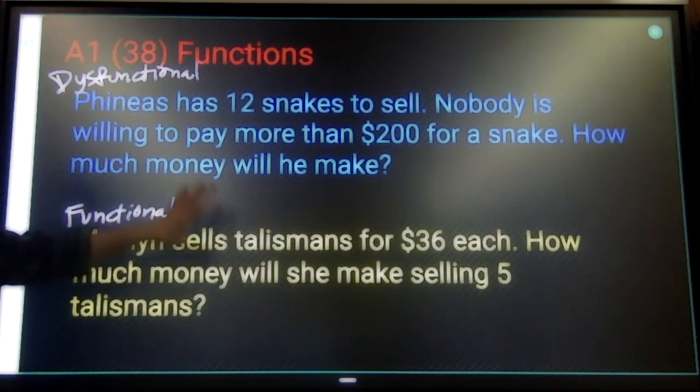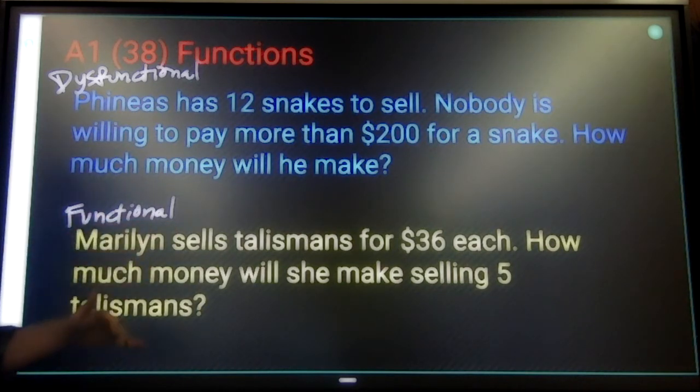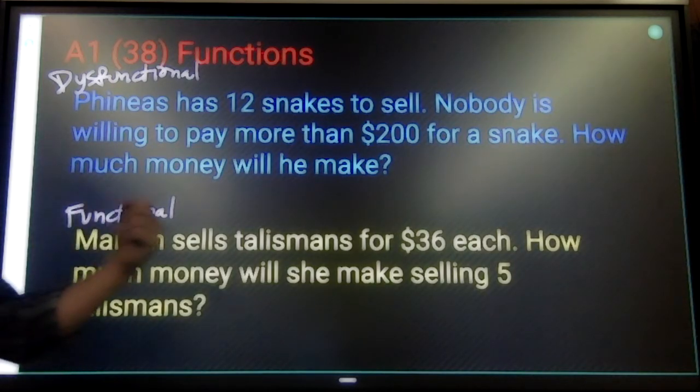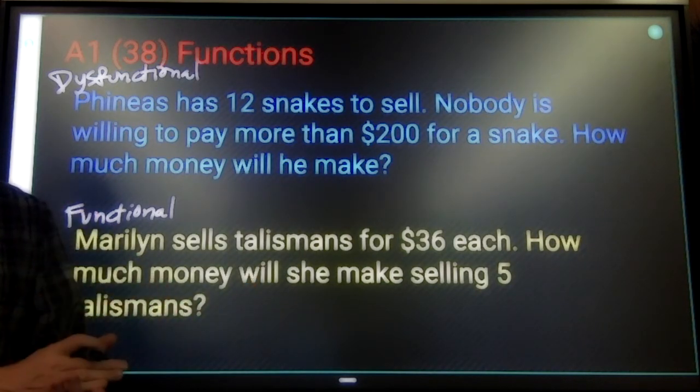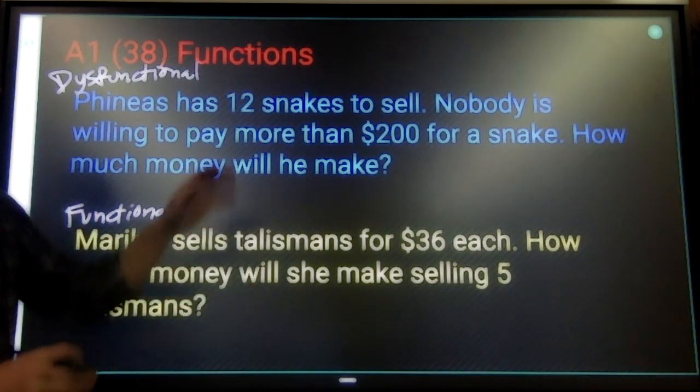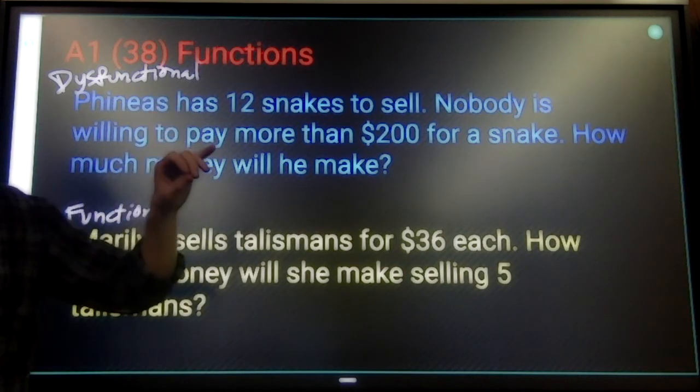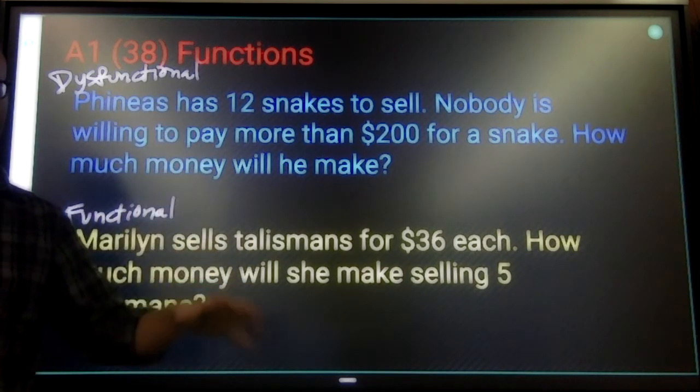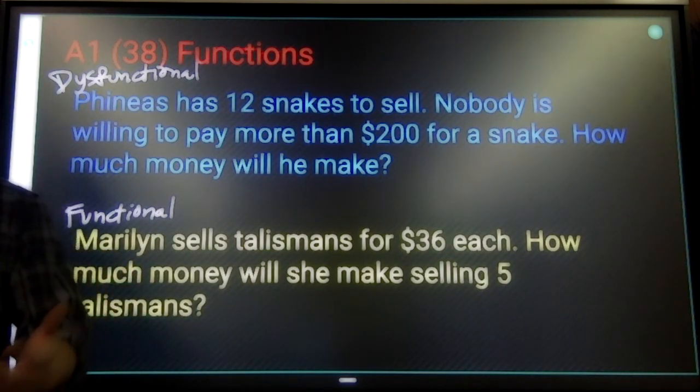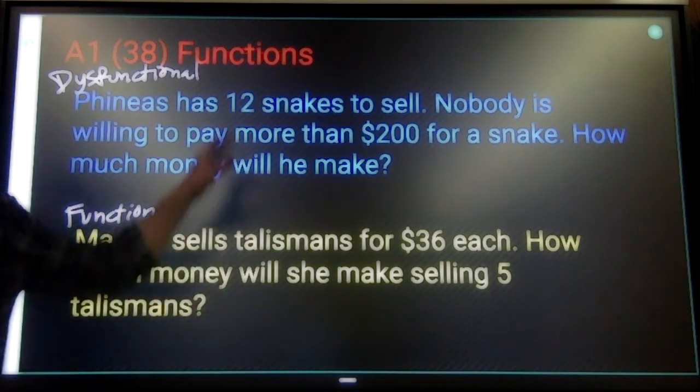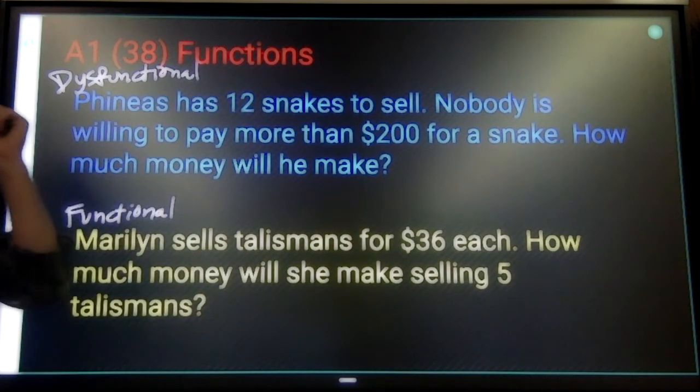So, the main difference is Marilyn's situation is much more well-defined. If you have an input for Marilyn's situation, you know your output. For Phineas' situation, it's ambiguous. One input could have more than one possible output. You need more information in Phineas' case to figure out what's going on.